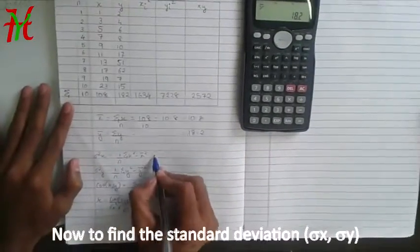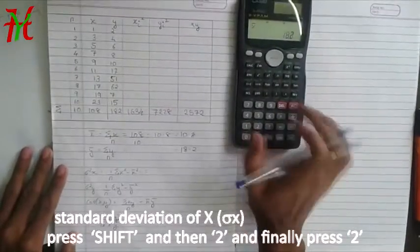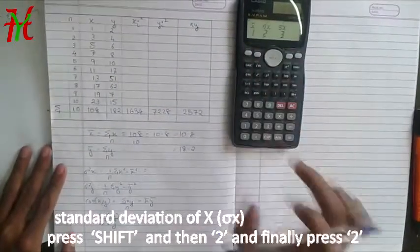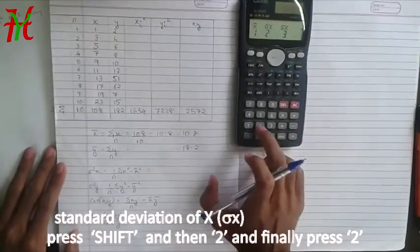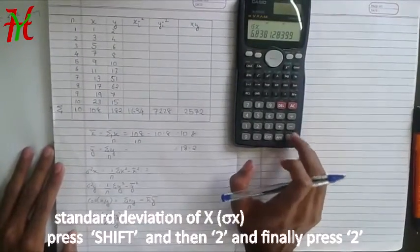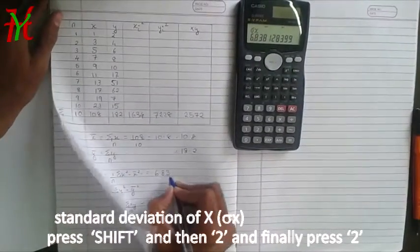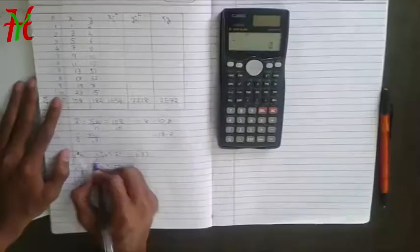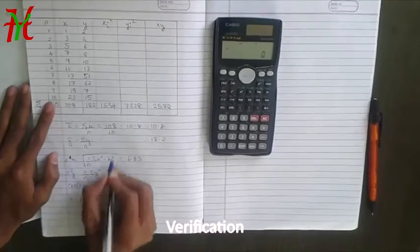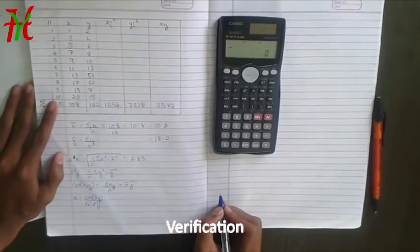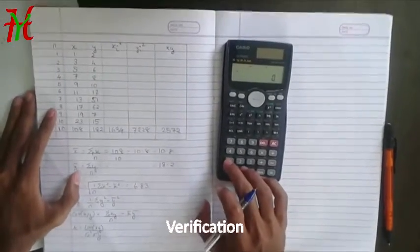Variance, conventionally we can use this formula conventionally, but this on the calculator, shift 2 and then you can see sigma X written over here. So just press 2 equals to, get the value as 6.83. I will find the standard deviation by using sigma X is equal to under root of 1 by N summation X square minus summation X bar the whole square. To get this, we have the value of summation X square 1634 divided by number is total 10 minus.